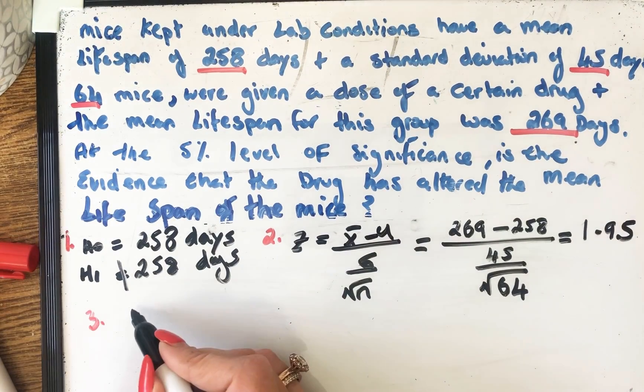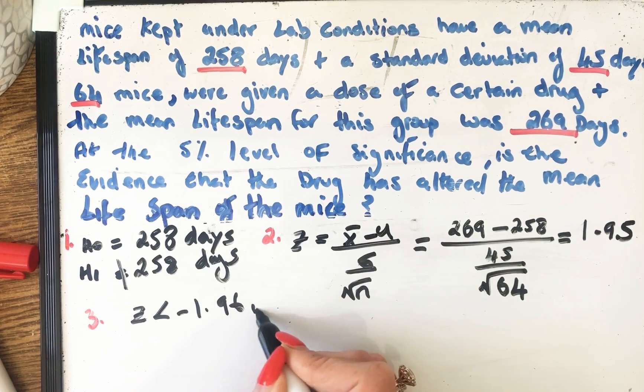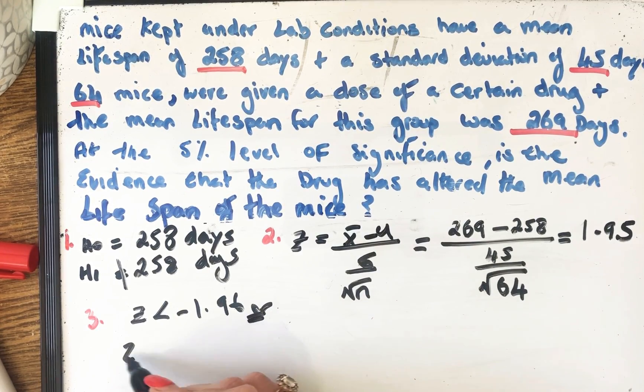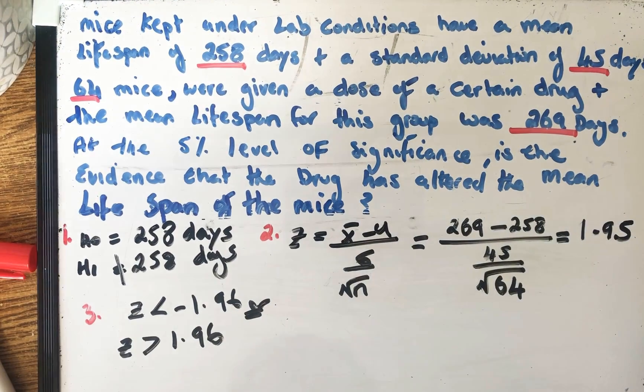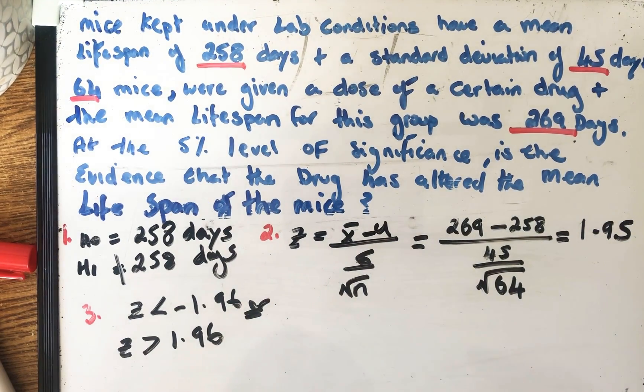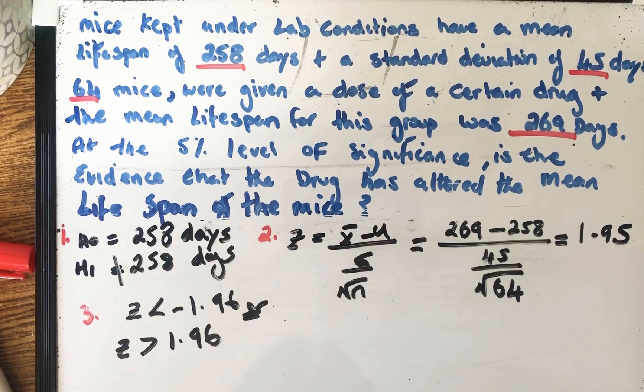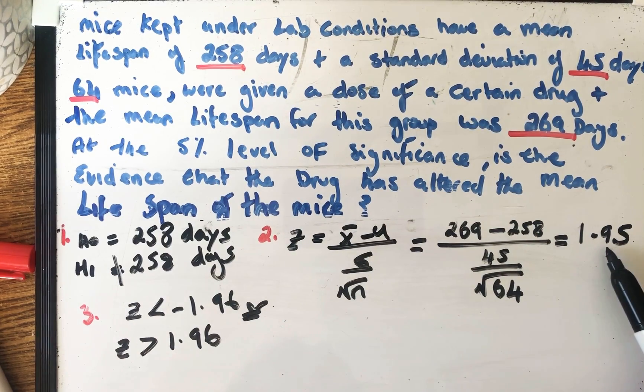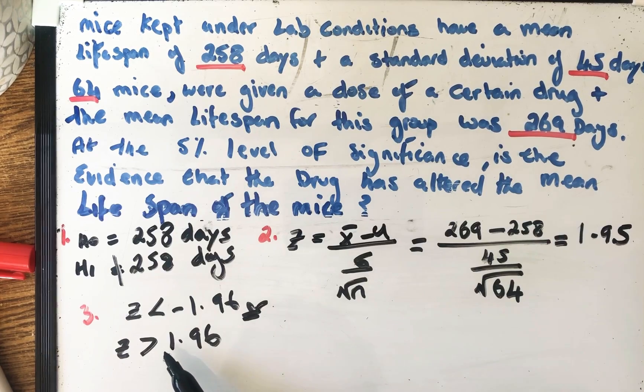So we said that if Z is less than minus 1.96, or if Z is greater than 1.96, we reject the null and accept the alternative. So learn that off. You reject the null and accept the alternative if your Z is outside these numbers. And you can see here that we got Z to be 1.95.